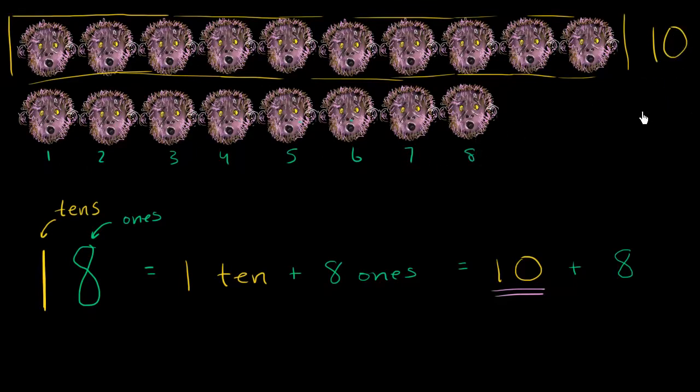So we started with 10. We added 8 more monkeys to get to 18. And once again, how did we first think about that? Well, 18 is 1 ten plus 8 ones, or 10 plus 8.